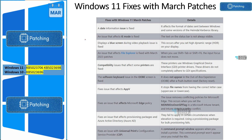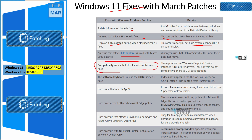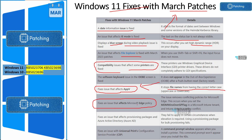This is the long list of fixes coming with March patches. A date information issue was fixed, IE mode issue was fixed, a blue screen issue during video playback was fixed, and File Explorer issue was fixed. A printer compatibility issue was also fixed. For enterprises still using AppLocker, issues with file names and upper/lower case letters are also fixed. Microsoft Edge policy issue — specifically MDM wins over Group Policy — is now fixed. Provisioning packages and Azure AD provisioning packages issues are both fixed, and Universal Printer CSP issue is also fixed with this March update.